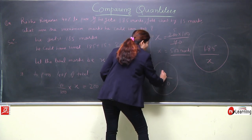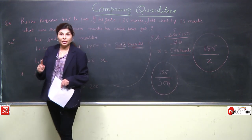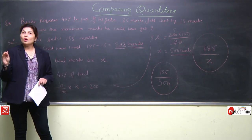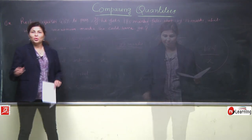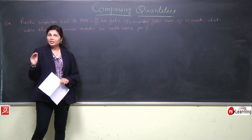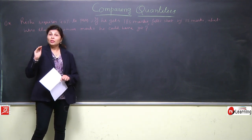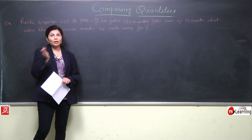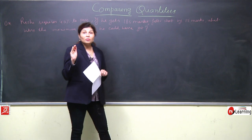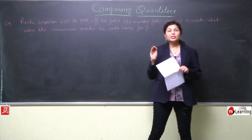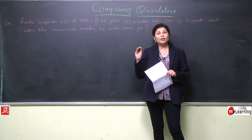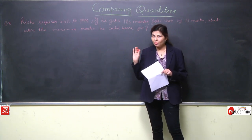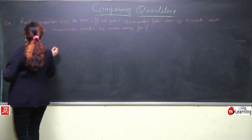Rishi got 185 instead of 200. अगर 200 ले आता, तो वो pass हो जाता, but in this case Rishi is not passed in this exam. तो दोस्तो, हमने question को X लेके solve किया. Rishi को pass होने के लिए जितना भी total exam है उसका 40% चाहिए. Answer आया 500 marks - means examination 500 marks का था और Rishi को चाहिए था 200.